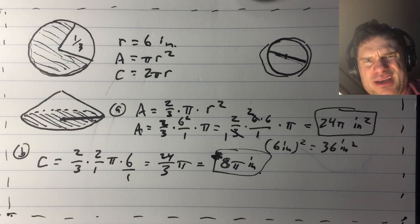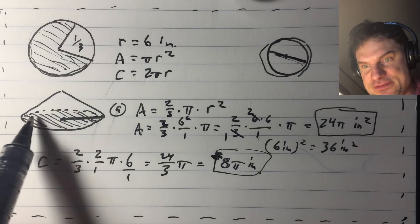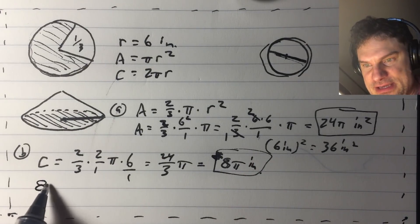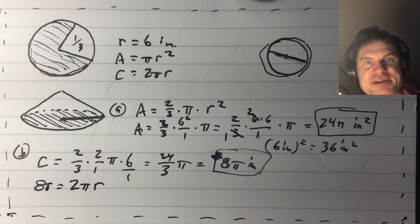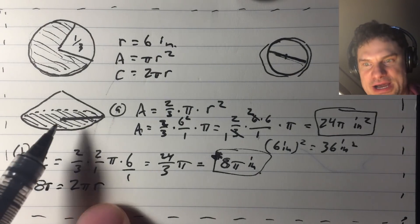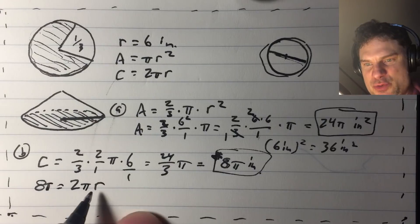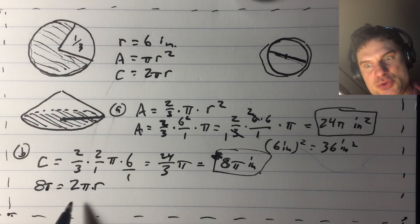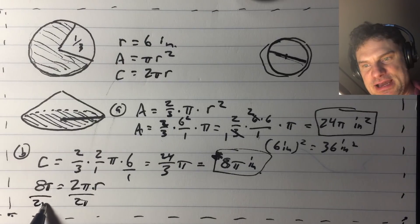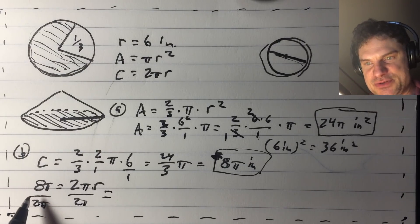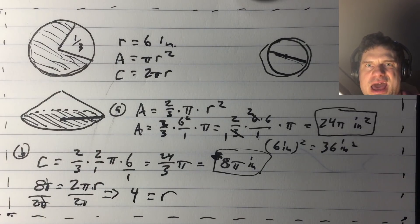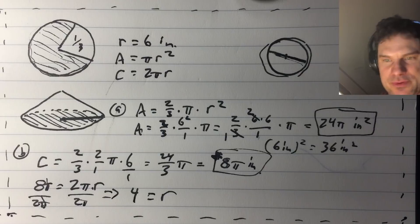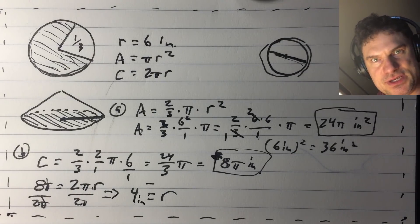What we have now is the circumference of this new cone — we need to find the radius. We already know the circumference equation, and this equals 8 pi. So: 8 pi equals 2 pi r. We can divide both sides by pi — the pi's go away — and then 8 over 2 is 4, so r equals 4. That is the radius of the base of the cone. And it is inches, of course. You have to write those units.